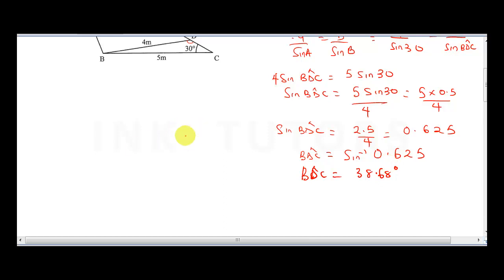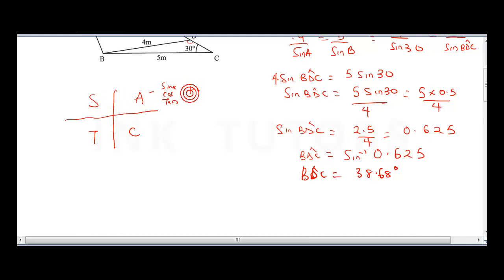To get the obtuse angle of BDC, remember our ASTC. When the angle is between 0 and 90 degrees, all of sine, cosine, and tangent are positive. In the second quadrant, between 90 and 180 degrees — where the obtuse angle falls — sine is positive. Since sine is positive, we will now find our obtuse BDC.